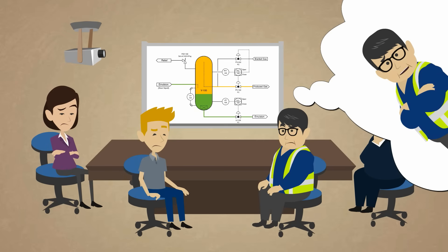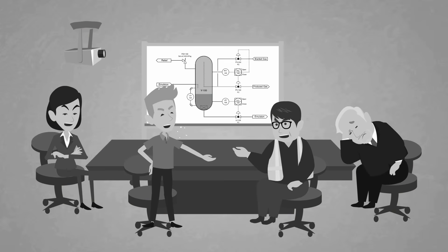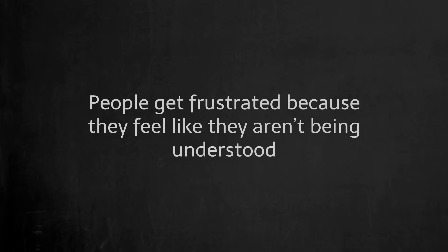Even without any safeguards, the chance of overpressure is extremely unlikely. When we discuss the chances of something occurring, we typically use an internal reference and assume that everyone else has the same understanding. This poor communication results in conflicts that are common in a PHA. People get frustrated because they feel like they aren't being understood.